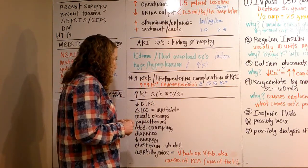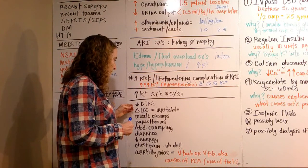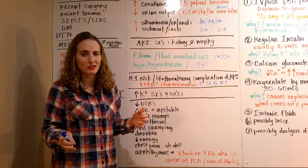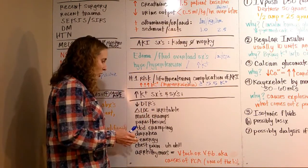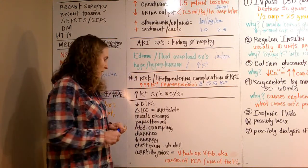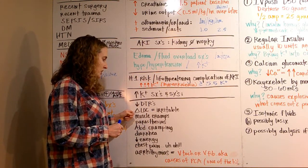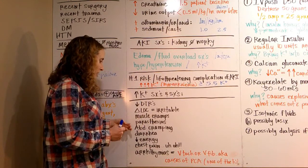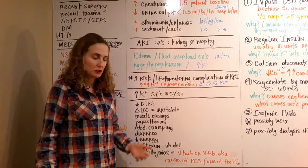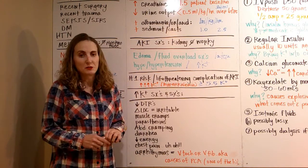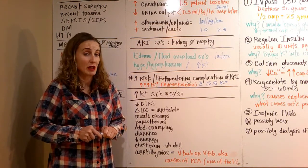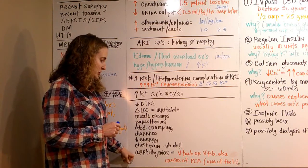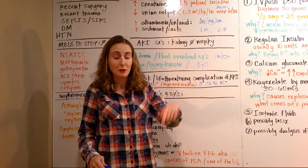Some signs and symptoms: decreased reflexes response, so deep tendon reflexes are going to be decreased. Their LOC is going to be changed, they're going to be more irritable, muscle cramps, paresthesia (tingling), abdominal cramping, diarrhea, decrease in energy, and then chest pain. Once you get to the chest pain phase, that means their potassium is probably pretty high.